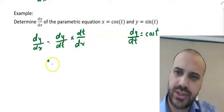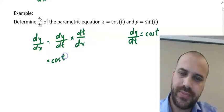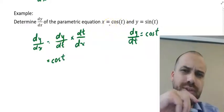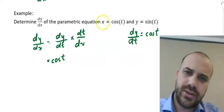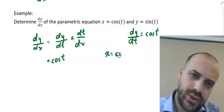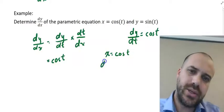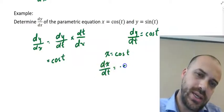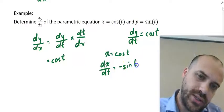Alright, so I can put that cos t in here. Now, this one here, a little more confusing. We know that x equals cos t. So we know that derivative of x with respect to t is going to be equal to negative sin t.